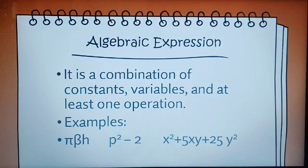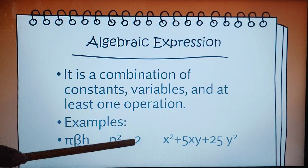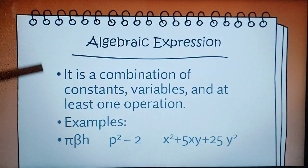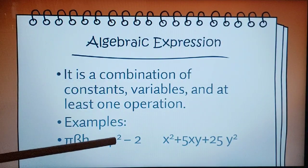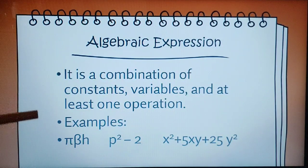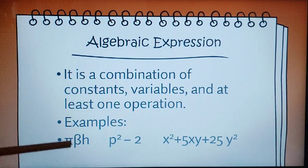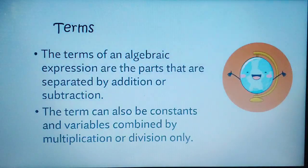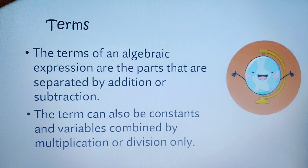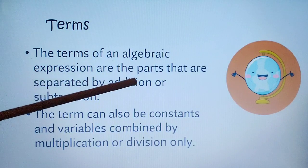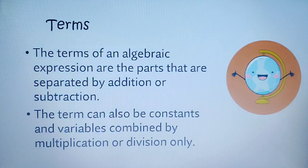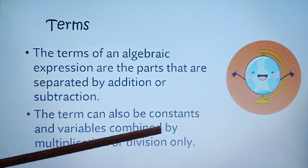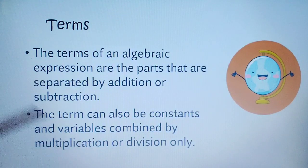So we have here algebraic expressions. An algebraic expression is a combination of constants and variables, and at least one operation. Now we're going to identify the terms. The terms of an algebraic expression are the parts that are separated by addition or subtraction. A term can also be a constant and variable combined by multiplication or division only.